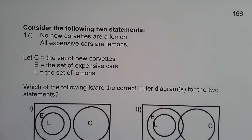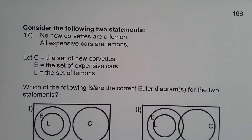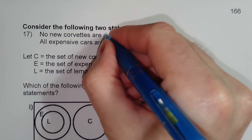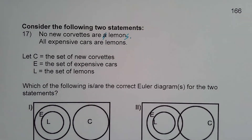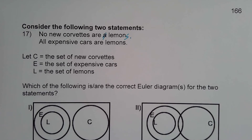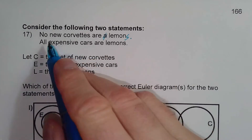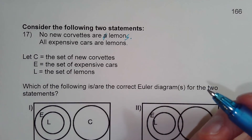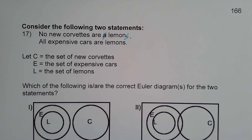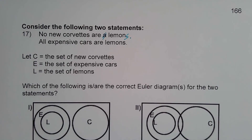Let's consider the following two statements: 'No new Corvettes are lemons' and 'All expensive cars are lemons.' They ask which Euler diagrams correctly represent these. For 'no new Corvettes are lemons,' Corvettes and lemons have to be separate, non-overlapping circles.